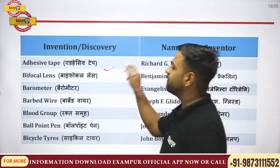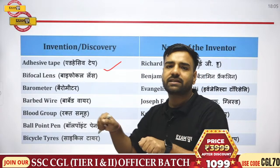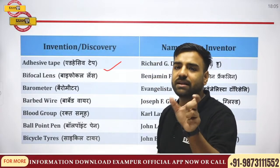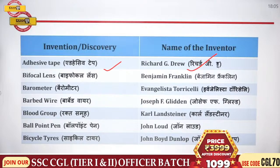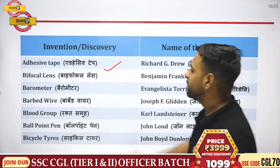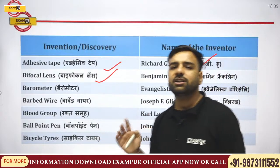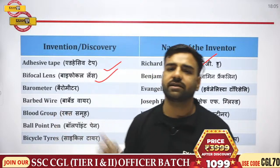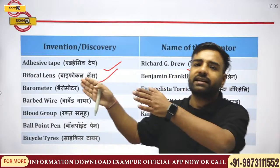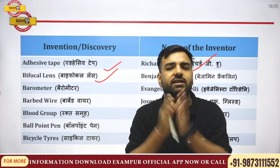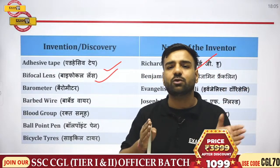Adhesive tape — whenever our page is torn or something needs to be pasted, we use adhesive tape. The discoverer was Richard G. Drew. Next, talking about bifocal lens — we were discussing issues like hypermetropia, which is farsightedness, and myopia, which is nearsightedness.